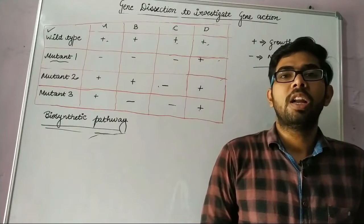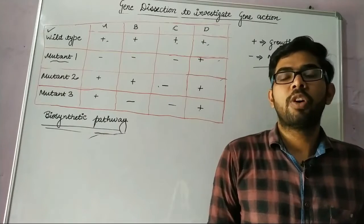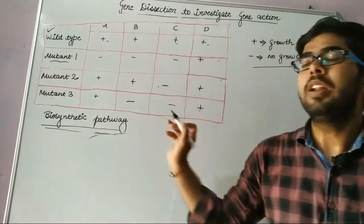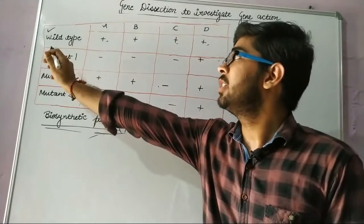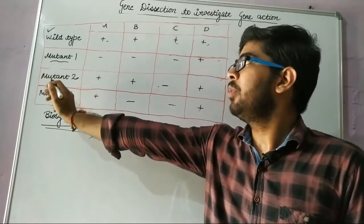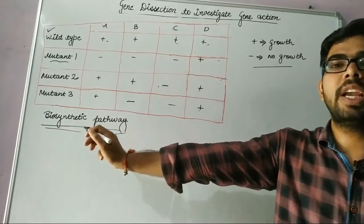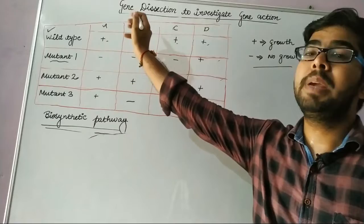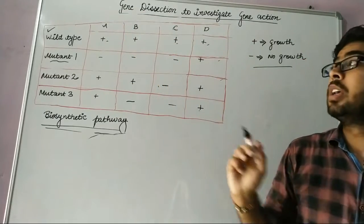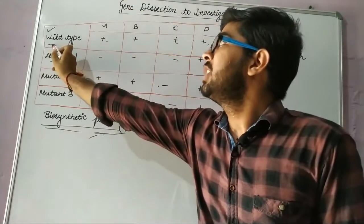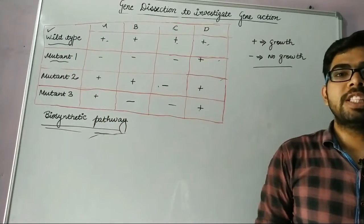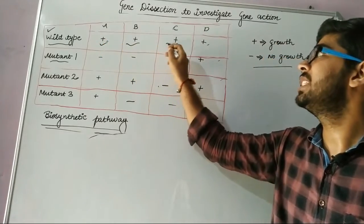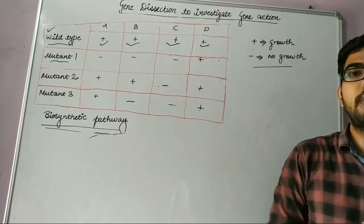Now we will do a question to understand this concept. There is a table given with different organisms: wild type, mutant 1, mutant 2, and mutant 3, which are grown in media containing compounds A, B, C, and D. In the case of wild type, all enzymes are in wild type form, so there is growth in media containing A, B, C, and D.